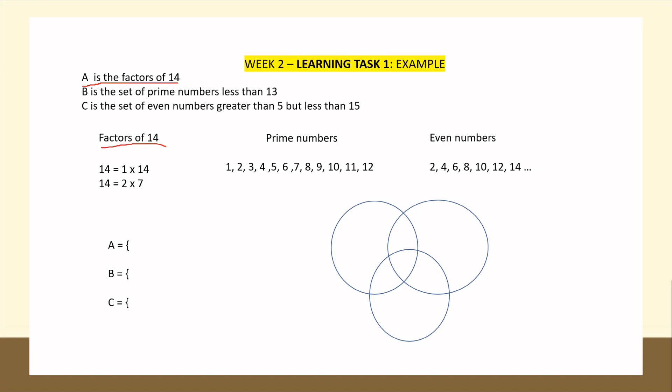For Set A, the factors of 14 — the numbers that when multiplied give 14 — are: 1 times 14 equals 14, and 2 times 7 equals 14. Therefore, the factors of 14 are 1, 2, 7, and 14.